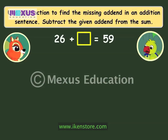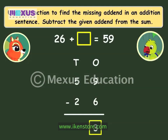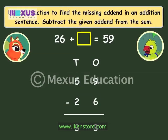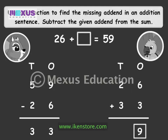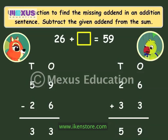All we have to do is subtract the given addend from the sum. So we will have to subtract 26 from 59. To check if this answer is correct, let us add 26 and 33 and see if the sum is 59. Adding the ones gives 9, adding the tens gives 5. You see, the sum is 59 — so our answer that the missing addend is 33 is correct.